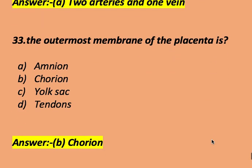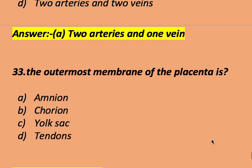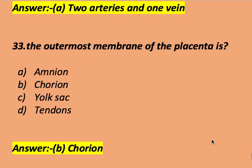The outermost membrane of the placenta: amnion, chorion, yolk sac, or tendon. The right answer is chorion. Chorion is the outermost membrane of the placenta, and amnion is the innermost membrane of the placenta.